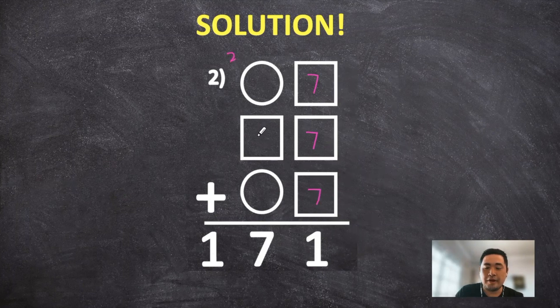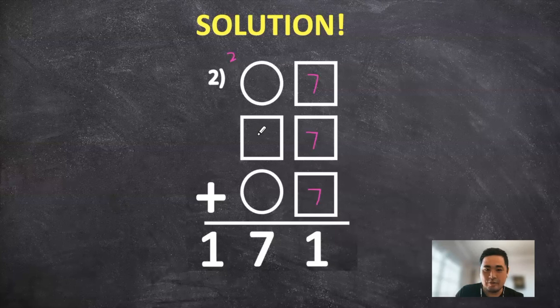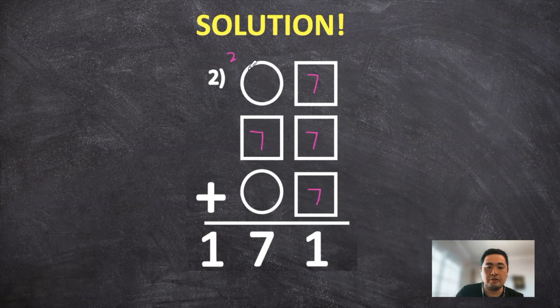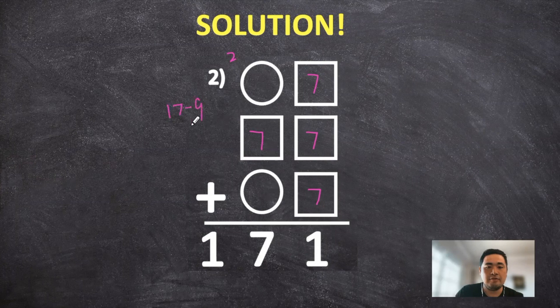And let's not forget to include the seven in the square in the middle. So once we do that, the tens digits are going to equal 7 plus 2 and 9. So if we subtract 17 from 9, that's going to equal 8.